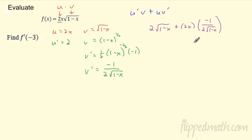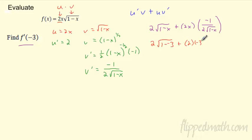So plug in x = -3 wherever there's an x. It'll be 2 times √(1-(-3)), then 2 times (-3) for the u term, and then the big parentheses -1 over 2√(1-(-3)). This works out nicely — this is really 2 times √4.